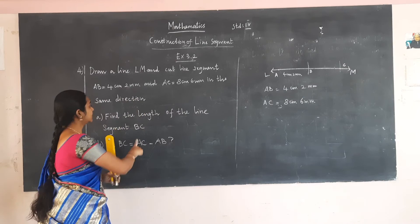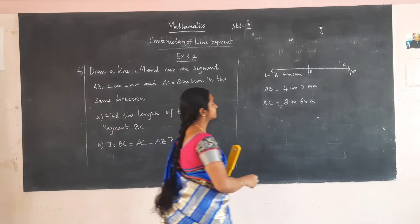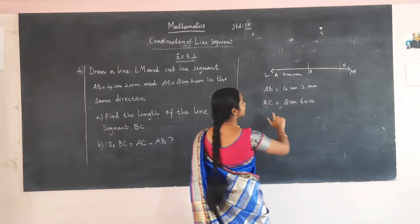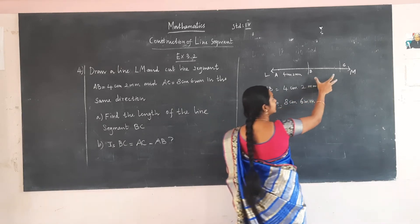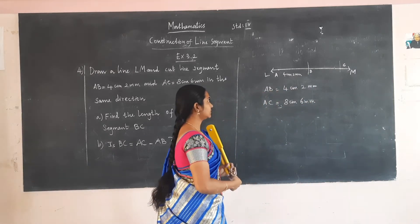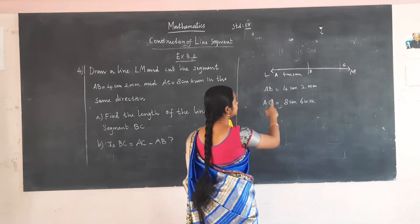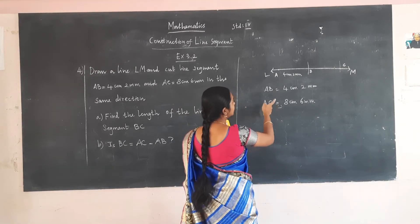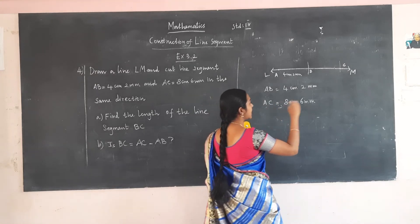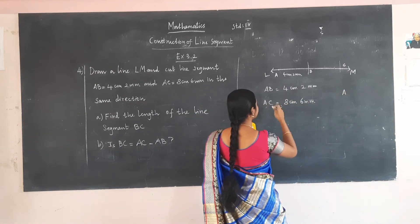Find the length of line segment BC. We know the length of AB and we know the length of AC, but we do not know the length of BC. So we have to subtract AB from AC.